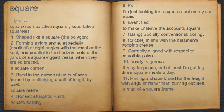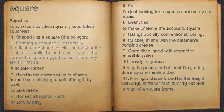Square. Adjective. 1. Shaped like a square, the polygon. 2. Forming a right angle, especially, nautical, at right angles with the mast or the keel, and parallel to the horizon, said of the yards of a square rig vessel when they are so braced.